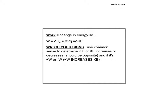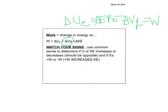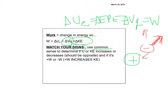Work is a change in energy, so we put delta in front: delta-U = delta-V times Q, which equals work. Work causes a change in kinetic energy — it makes things accelerate. Watch your signs. If I have a positive charge and I move a negative charge away from it, I'm increasing its potential energy and decreasing its kinetic energy — that's negative work.